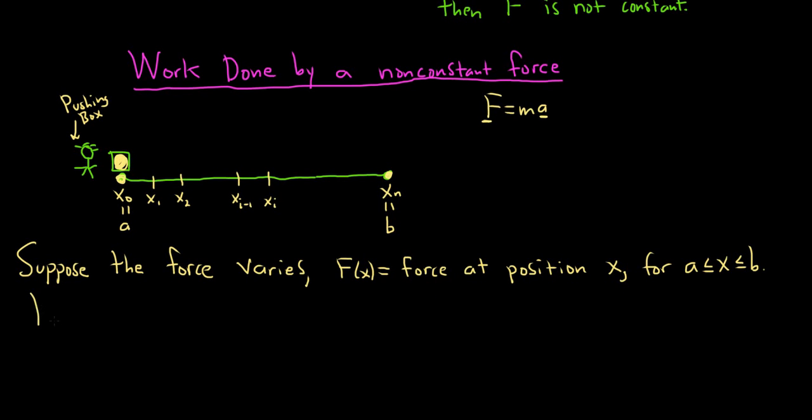So now what we'll do is we're going to pick some random number. Pick c sub i in some random interval, which we'll call x sub i minus 1, x sub i. So we're picking some number in some random interval. This is some interval, i-th interval. We're picking a random number in a random interval. So very, very random.